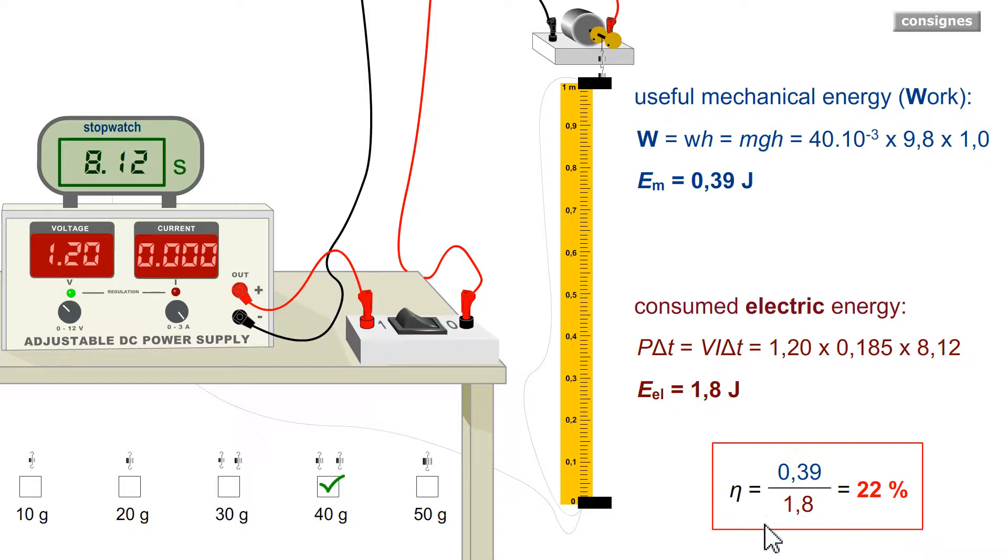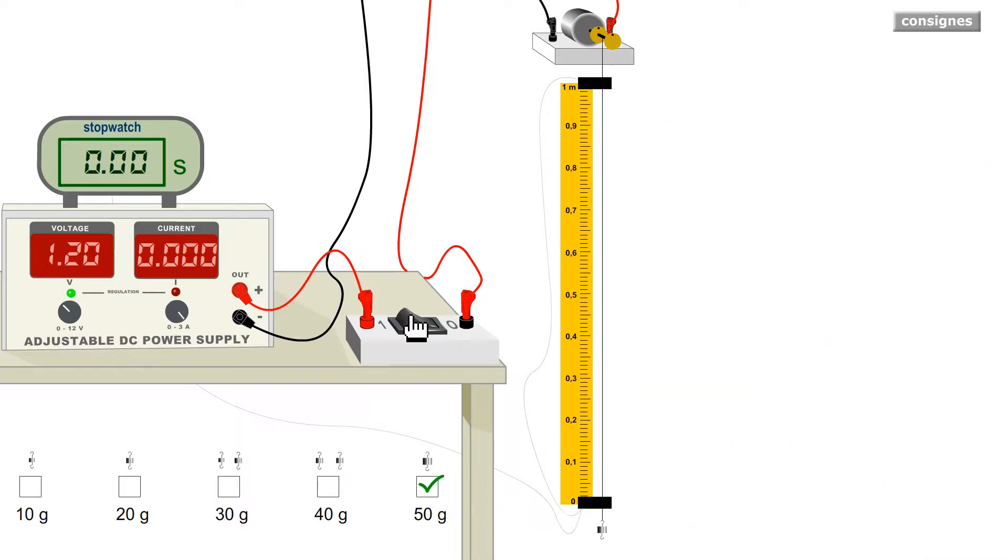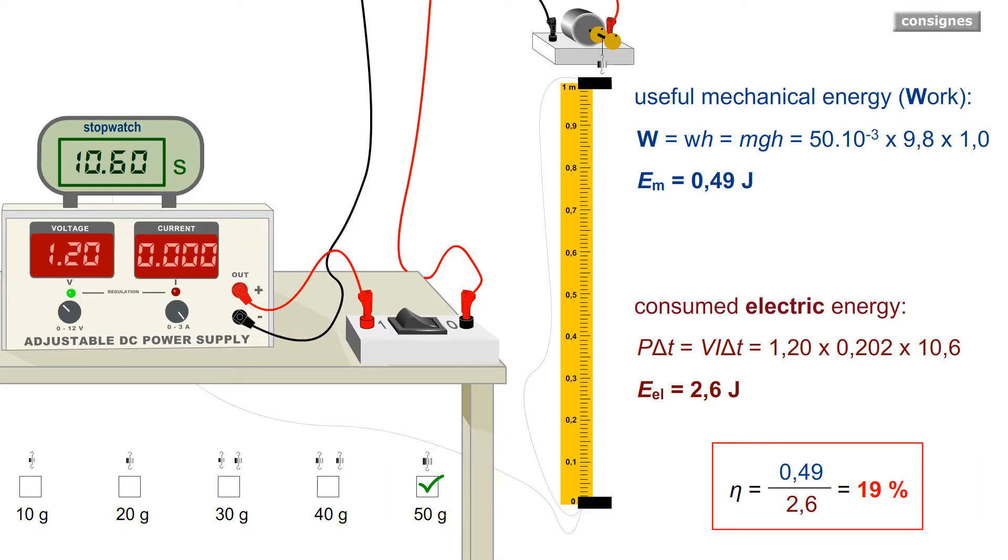And finally for 50 grams, the effort required is greater. I find 19%, therefore the efficiency collapses beyond a certain value. So I can answer the original question.